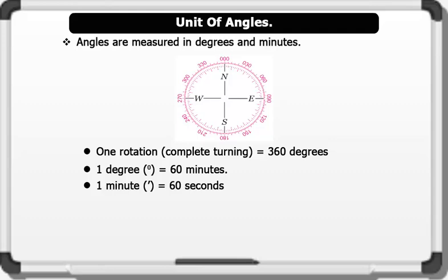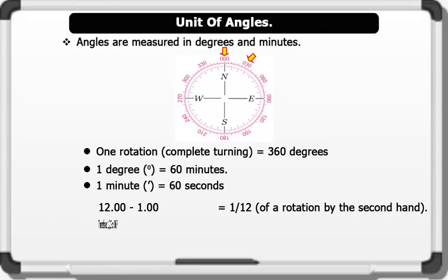Remember that the clock is subdivided into 12 equal parts. A movement from the starting point of 12 o'clock to 1 o'clock is 1 over 12 of a rotation by the second hand.